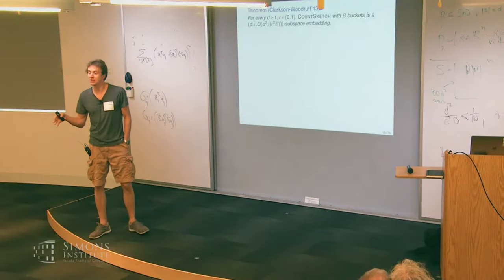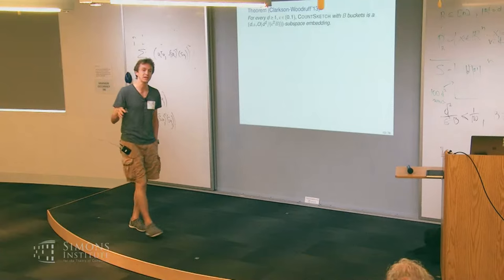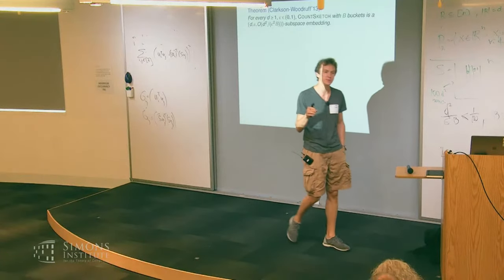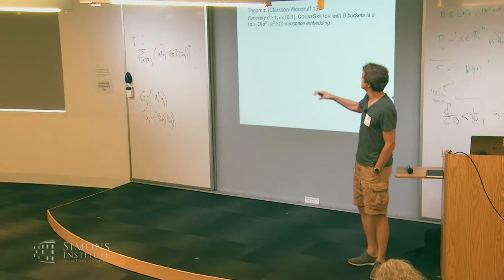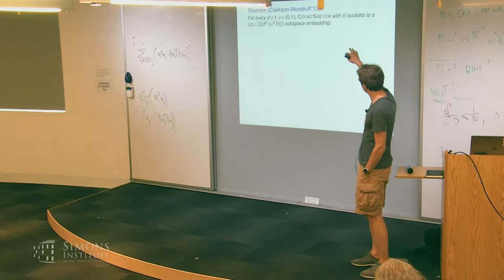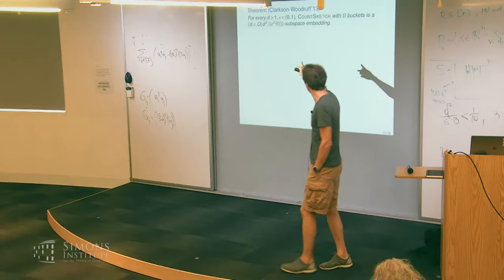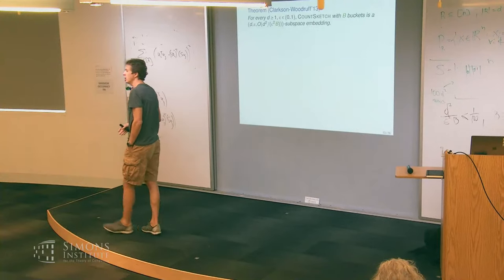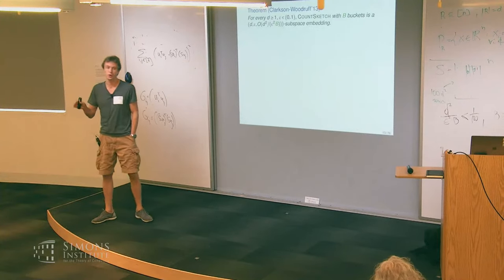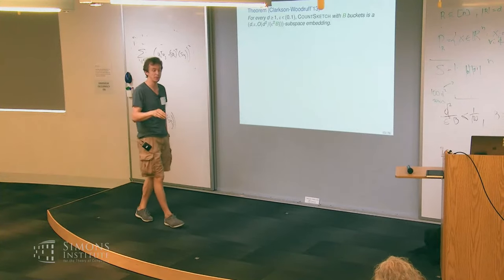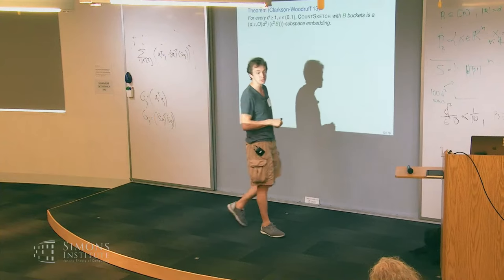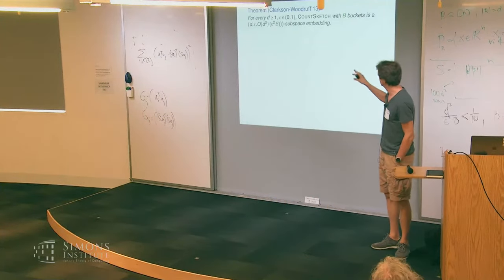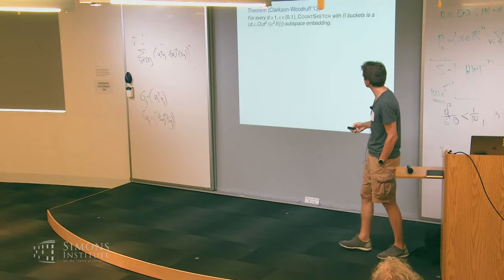We are continuing to talk about applications of sketching in numerical linear algebra, and specifically we will finish the proof of the theorem on the slide: namely that the count sketch matrix with about d-squared number of buckets is a subspace embedding with constant probability and constant precision.